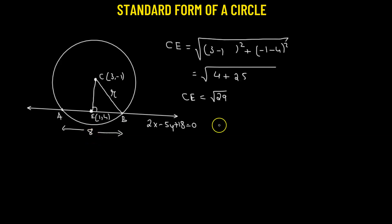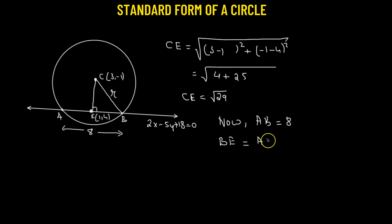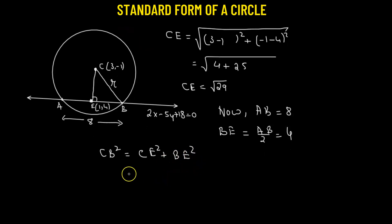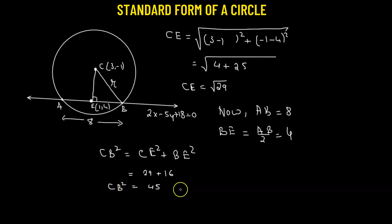We are given the length of AB as 8 units. Since the perpendicular from the center bisects the chord, BE equals half of AB, so BE equals 4 units. Applying the Pythagorean theorem: CB² equals CE² plus BE² equals 29 plus 16 equals 45. Therefore, the radius CB equals the square root of 45.